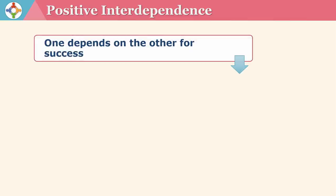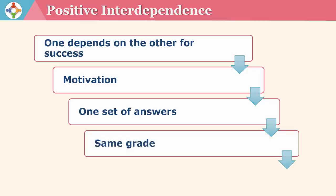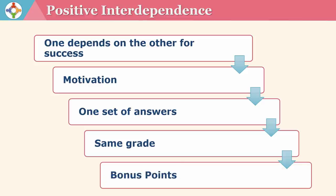In order to structure positive interdependence in a cooperative learning environment, the teacher has to plan in advance to create an environment of interdependence. The message should be: one depends on the other for its success. The teacher needs to motivate every group member to help each other. The teacher can structure positive interdependence by ensuring there is one set of answers for the task, or by giving the same grade to all members, or bonus points for helping each other achieve the goal.